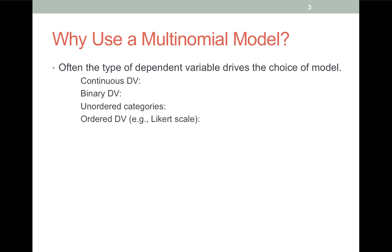For example, if you have a continuous dependent variable — say blood pressure, body mass index, or wage — then ordinary least squares works completely fine. In other cases, you might have a binary dependent variable, in which case you'd use the binary logit or probit. Say you're looking at a mortality model, or trying to understand the determinants of who works and who doesn't, who retires and who doesn't, or who survives a surgery or who doesn't.